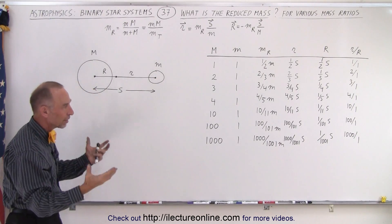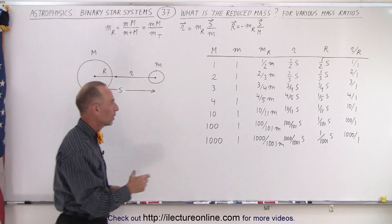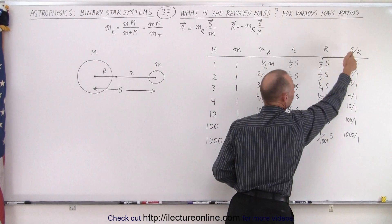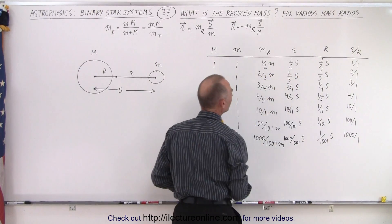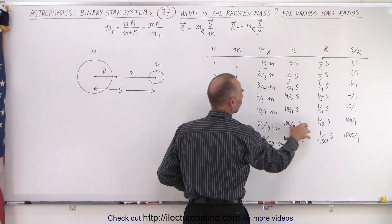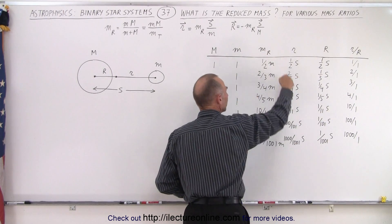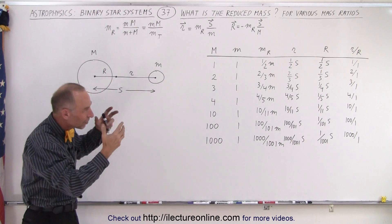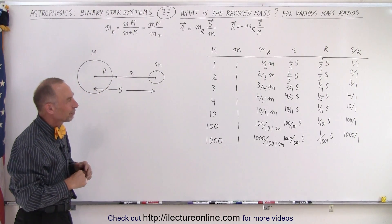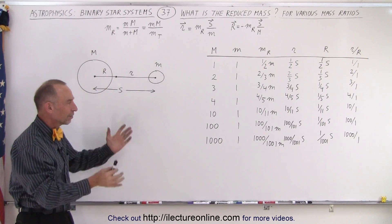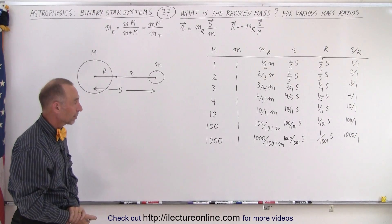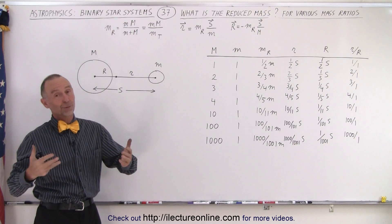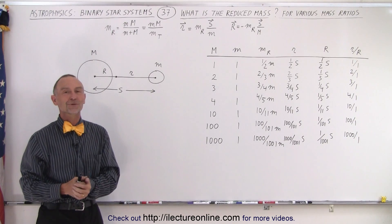So there you can see the relative relationship between the mass of the large object to the mass of the small object, the ratios of their orbital radii, the individual values of those two radii, and the value of the reduced mass. That table gives us a nice perspective of how things change as the relative size of the two objects in the binary system change. And that is how we get a very good understanding of the concept of reduced mass.